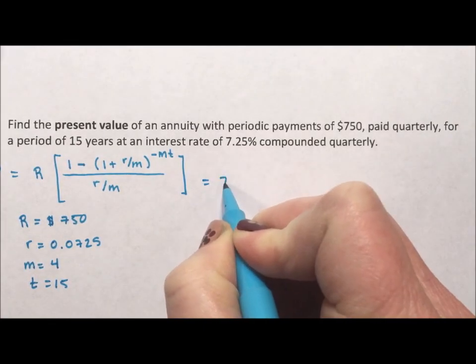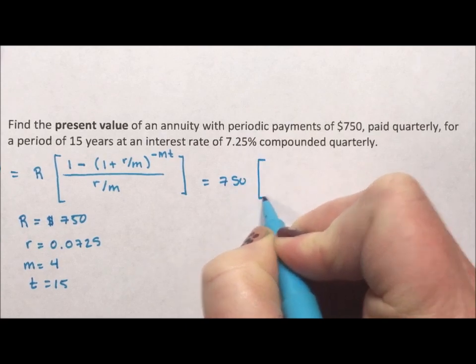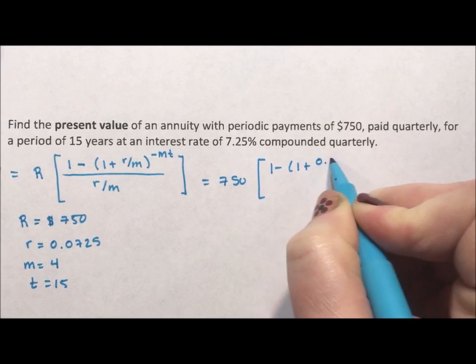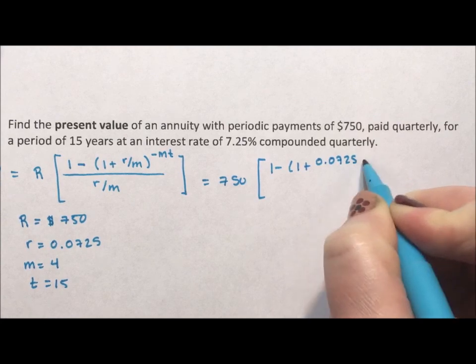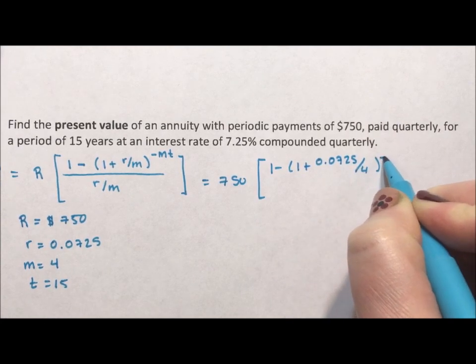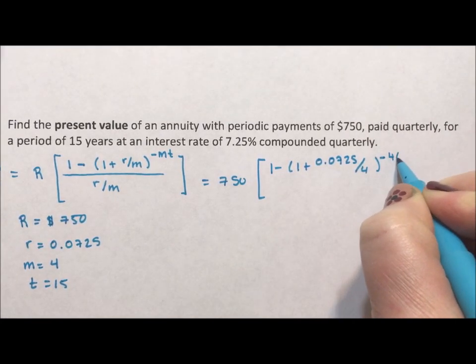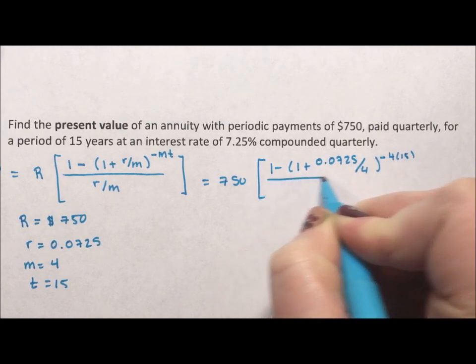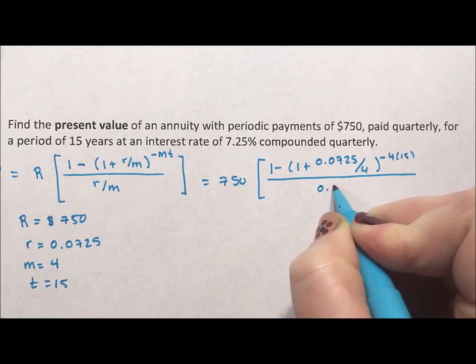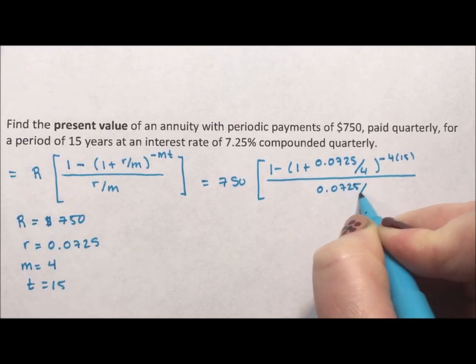So we have 750, 1 minus 1 plus 0.0725 divided by 4 to the negative 4 times 15, all divided by 0.0725 divided by 4.